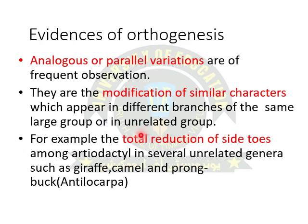For example, the total reduction of side toes among artiodactyls in several unrelated genera. The artiodactyls may be the giraffe, camel, or rhombo.